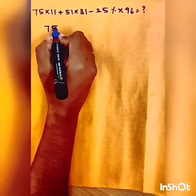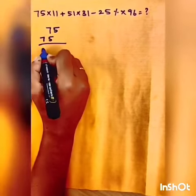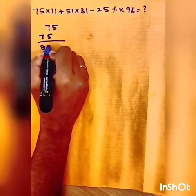So 75, you have to write 75 like this and leave one space and write the same 75. So by adding this 2, you will get 825.